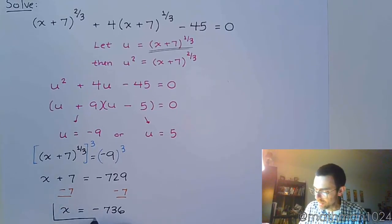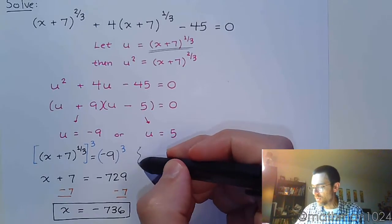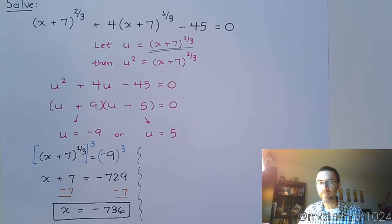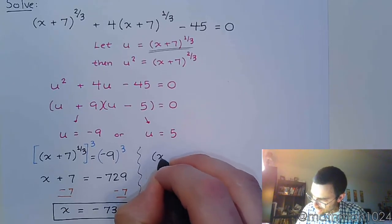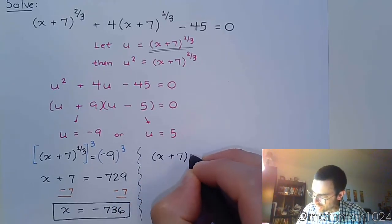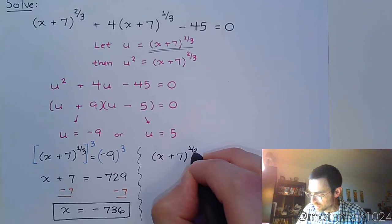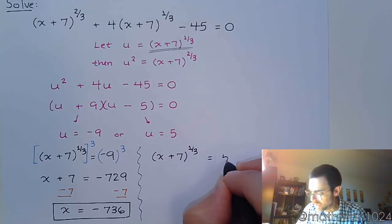That doesn't seem to be too bad. And we're going to repeat the same thing for the other half of this equation. So again, u is x plus 7 to the 1/3. And it equals 5.